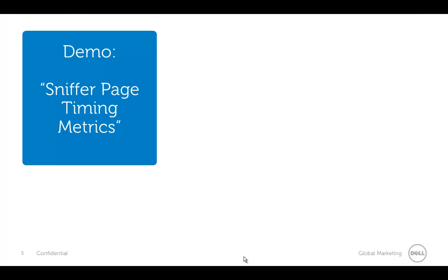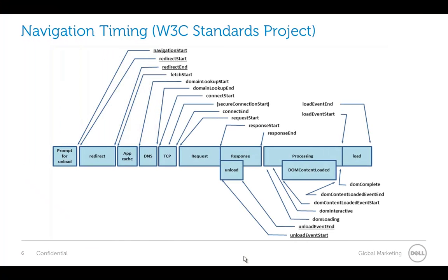The next thing we want to look at is navigation timing. This is a W3C standards project — W3C sets most of the standards for the internet. They've created an API where you can get all of this information out of most popular browsers, so this is a thing the browser itself has to support. Most mobile phone browsers and most regular web browsers support this today. Basically what you'll have is a navigation start, then redirect actions if the page gets redirected. After that it looks for content inside the browser cache, then does the DNS lookup time for anything not found in cache, and then starts setting up TCP connections once it has the DNS entry.